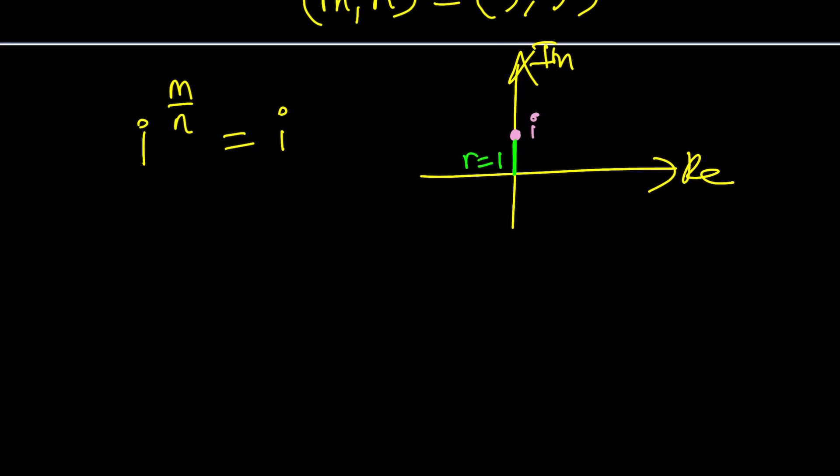We can do this on the Argand plane, which is a fancy name for the coordinate plane with real and imaginary axes. We have a number called i which is one unit away from zero, that is called the modulus, and there's an angle which is pi over two radians, that is called theta, which is the same thing as argument. If you're new to complex numbers, go ahead and check out my lecture videos.